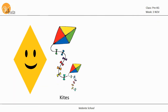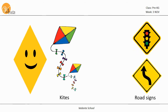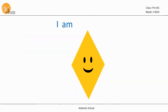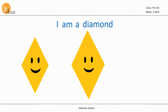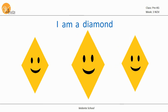Kites are diamond shaped. I am a diamond, a diamond, a diamond. I am a diamond, your four-sided friend.